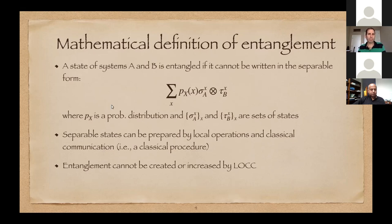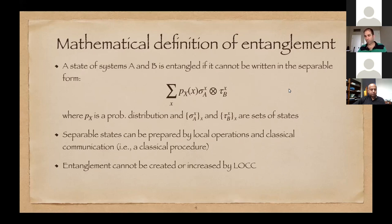I'm not going to get into too many details, but it's actually a computationally difficult problem. If you're given a mathematical description of a bipartite state and your goal is to decide if it's separable or not — you have to decide whether there exists a probability distribution and states such that the state can be written in separable form — that problem is computationally complex. It's known to be NP-hard, so hard for classical computers and very likely hard for quantum computers as well.